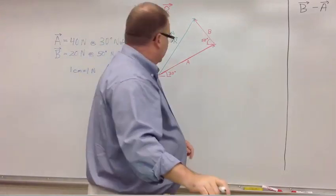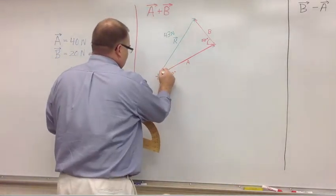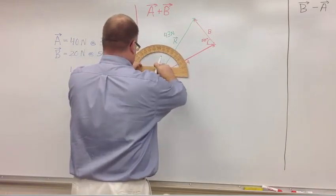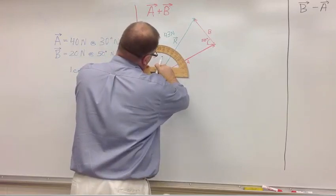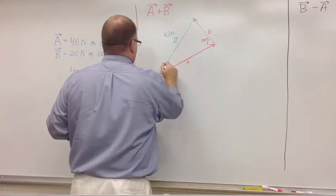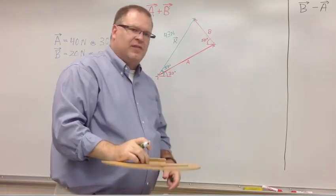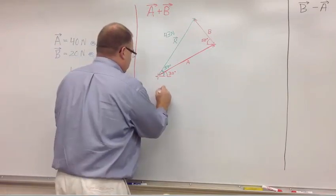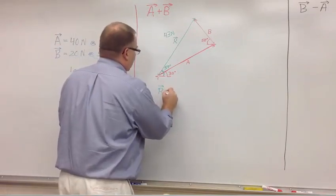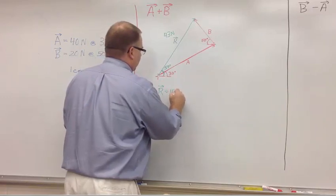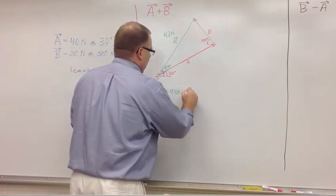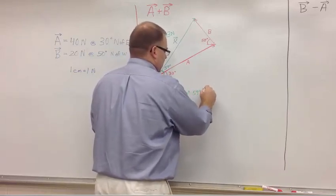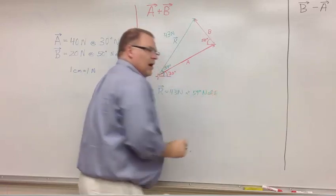Now I've got to measure the angle. I'm going to choose the angle that is north of east. I found that to be 59 degrees. I label it here. If I want to write the answer out, I give the magnitude 43 newtons at 59 degrees north of east.